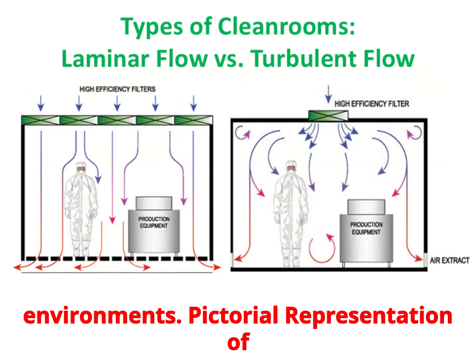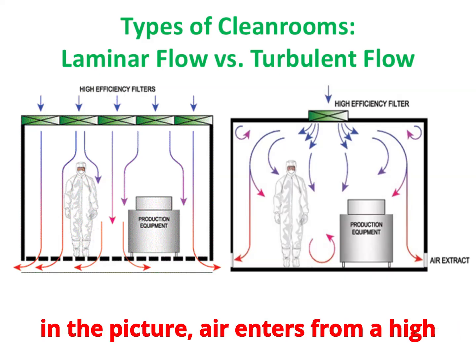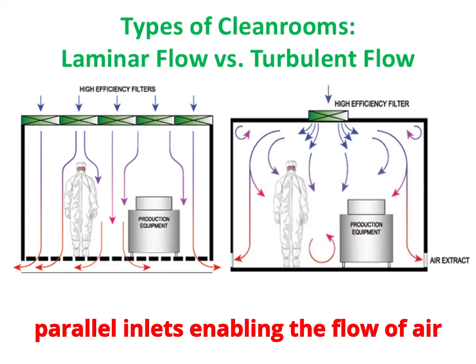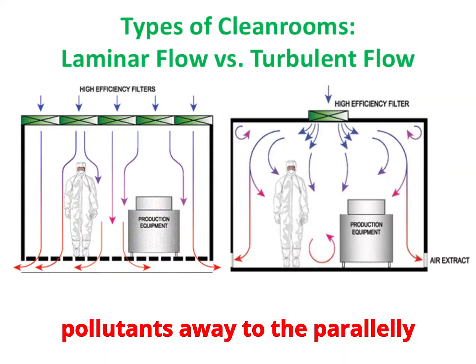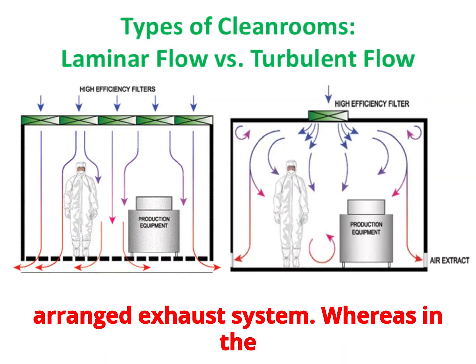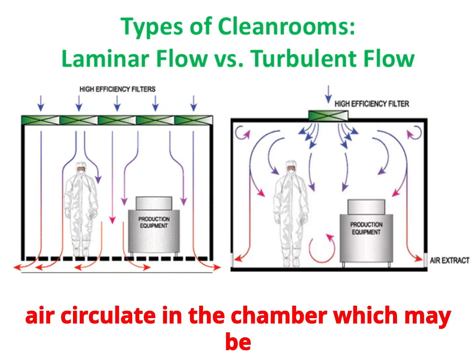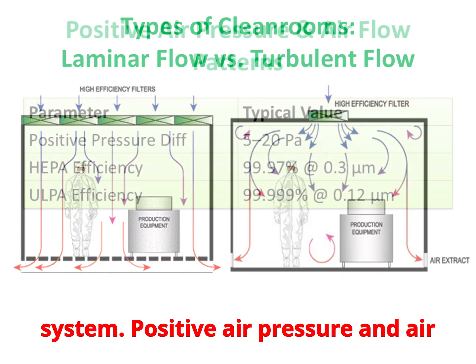As depicted in the picture, air enters from a high-efficiency filter system with parallel inlets, enabling the flow of air in one direction. This takes the pollutants away to the parallelly arranged exhaust system. In the turbulent flow system, the air inlet is centralized and air circulates in the chamber in any direction before going to the exhaust system.